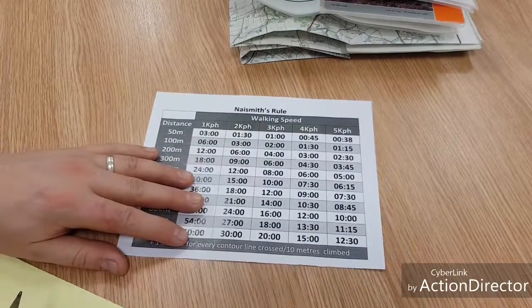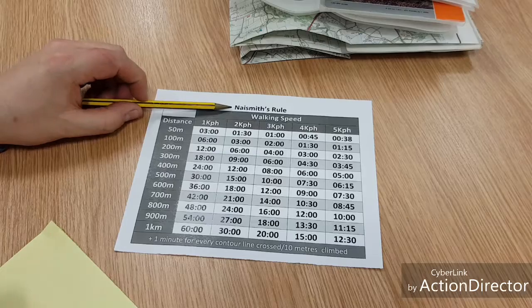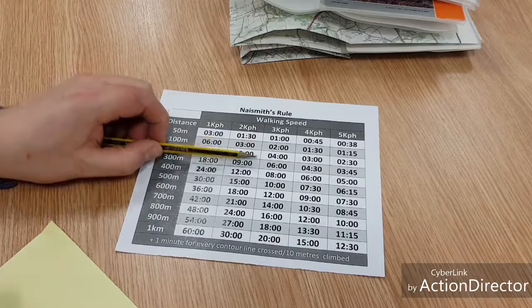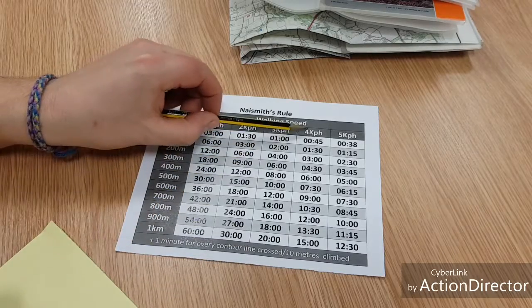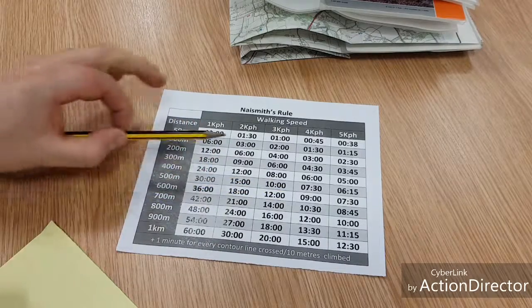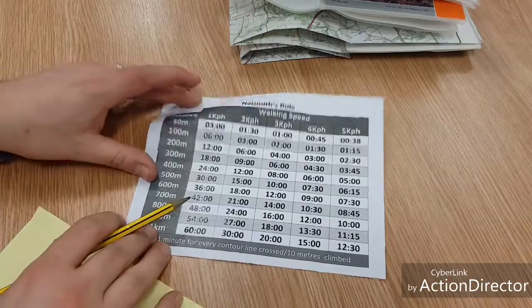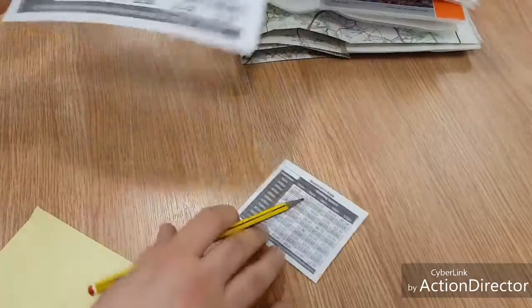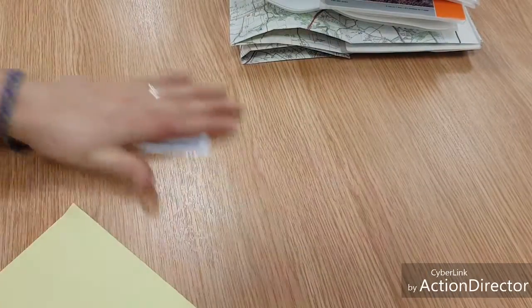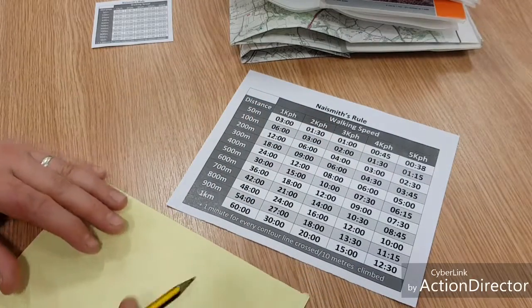But we are going to have a look at this thing here called Naismith's Rule. Naismith was a chap who estimated the speed that you walk and the distance that you walk, and he's basically had this table to say that if you're walking at four kilometers an hour and you're going to go 600 meters, it's going to take you nine minutes. So rather than have to estimate it each time, you've got this little table. What you might find is that your assessor or instructor has a little version for you, but you don't normally need to take these on expedition.